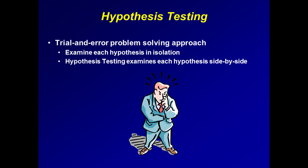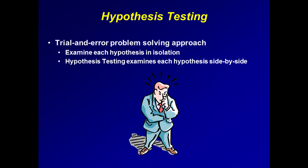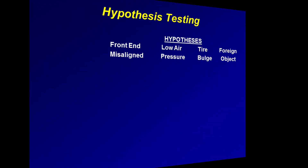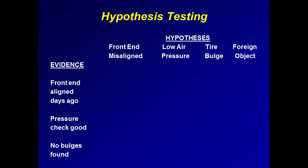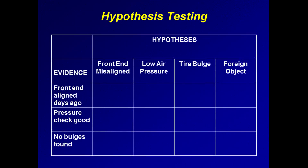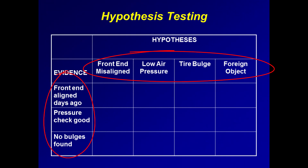Whereas in the trial and error approach, we analyze each hypothesis in isolation, in the hypothesis testing technique, we examine them together — side by side. First, we list the four hypotheses side by side, labeling them hypotheses. Then we list down the left side the evidence we have ascertained regarding each hypothesis. We then construct a matrix connecting the four hypotheses and the three items of evidence. This is a hypothesis testing matrix.